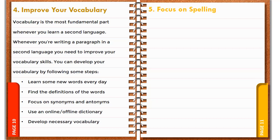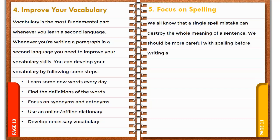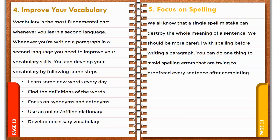Number 5: Focus on Spelling. We all know that a single spell mistake can destroy the whole meaning of a sentence. We should be more careful with spelling before writing a paragraph. You can do one thing to avoid spelling errors: try to proofread every sentence after completing your writing.